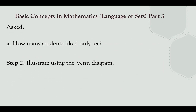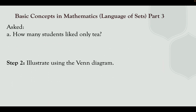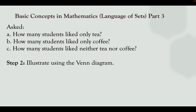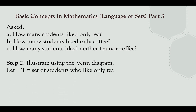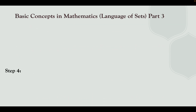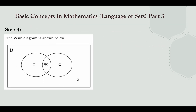What is asked? How many students like only tea? How many students like only coffee? And letter C, how many students like neither tea nor coffee? Step number two, let's illustrate the Venn diagram. Let T be the set of students who like only tea, let C be the set of students who like only coffee, and let X be the students who like neither tea nor coffee. Step number four, we draw the Venn diagram.